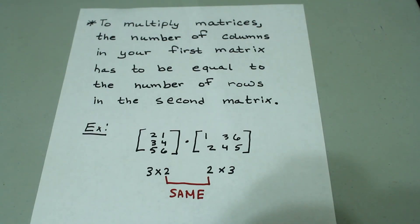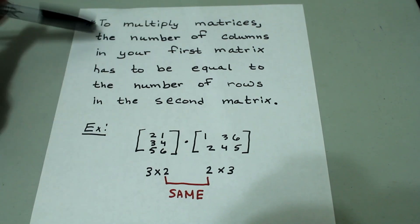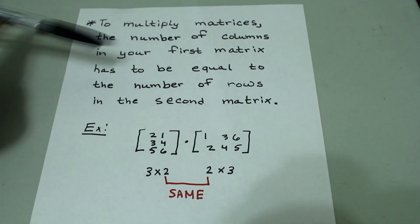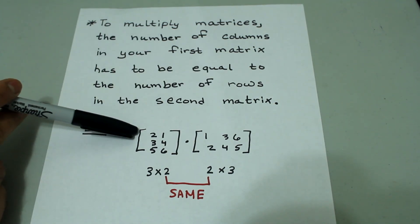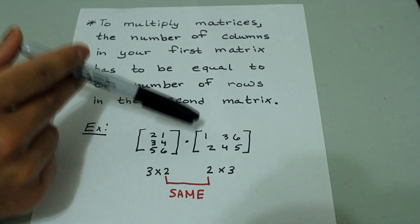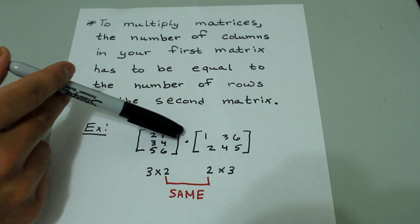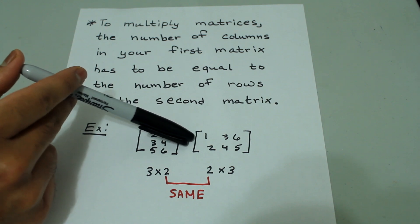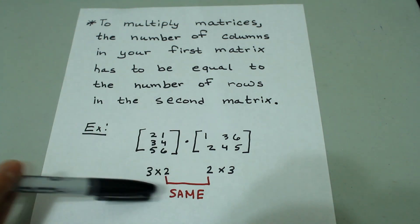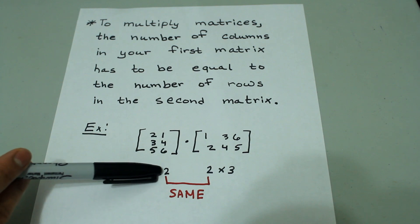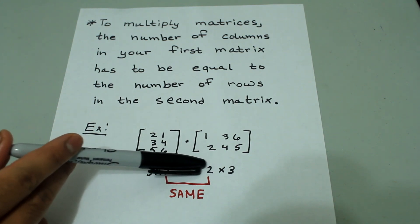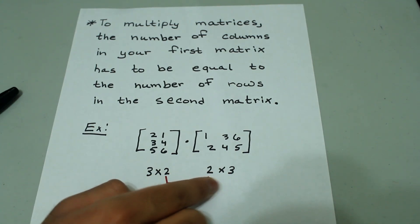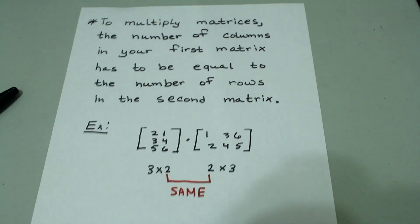In order to multiply matrices, the number of columns in your first matrix has to equal the number of rows in the second matrix. For example, we have a 3 by 2 matrix being multiplied by a 2 by 3 matrix. There are 2 columns in the first and 2 rows in the second — the inside numbers are the same. If you write the dimensions next to each other, the inside numbers have to match.